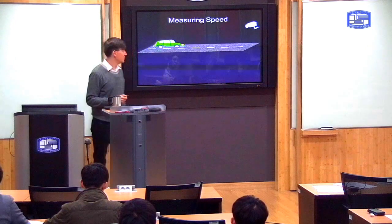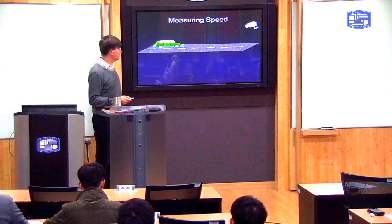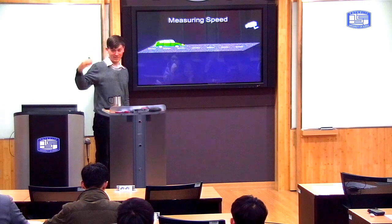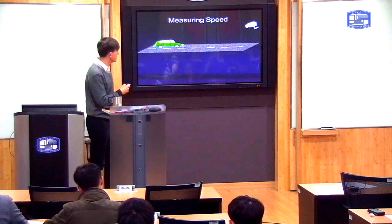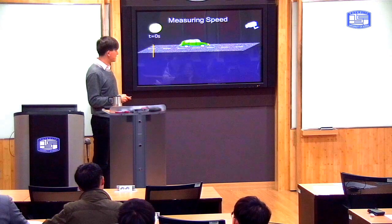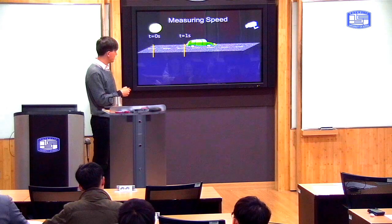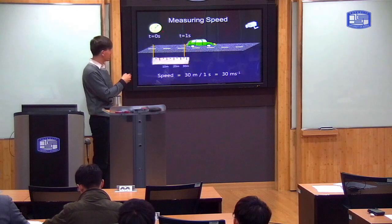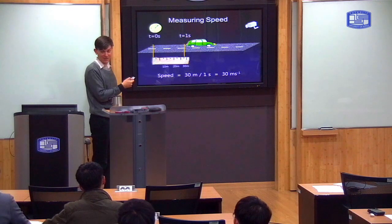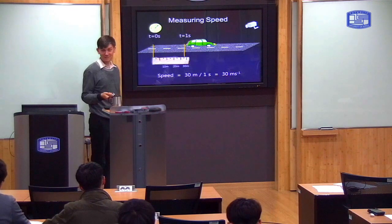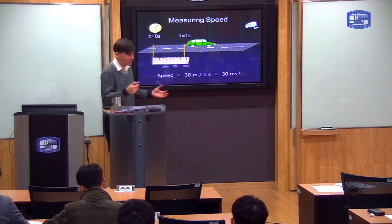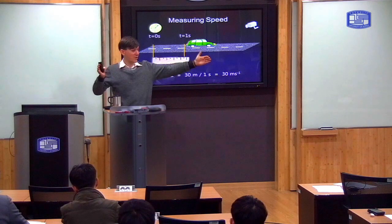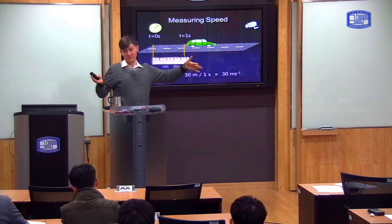First we have to think about how do you measure speed. The simplest way is to use the definition: speed is distance divided by time. So if I want to measure the speed of a car, I can measure the distance it travels in one second. If the car moves 30 meters in one second, then I know that its speed is 30 meters per second. That's the simplest way to measure speed — take a fixed unit of time like a second, see how far the thing moves, and then speed is distance divided by time.